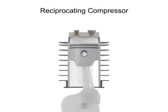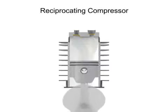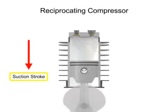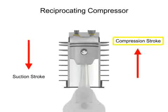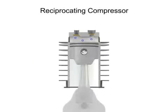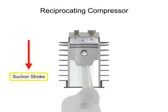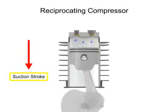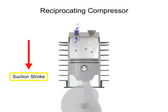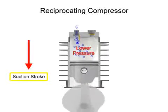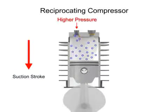The downward stroke of the piston is called the suction stroke. As the piston moves downward on its suction stroke, the volume increases within the cylinder. As the volume increases, the pressure within the cylinder becomes lower than the inlet air pressure. This allows the higher pressure outside air to push open the inlet valve and allow more air into the cylinder.